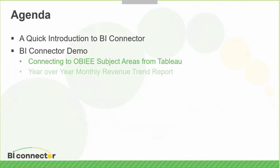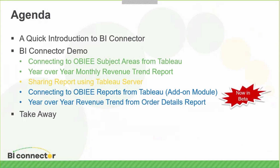Let's look at the quick list of things we're going to cover in this live demo. First, we'll walk through a brief introduction to BI Connector. Then we'll walk through five different scenarios: connecting to OBIE subject areas from Tableau, creating a year-over-year monthly revenue trend report, sharing the report via Tableau server, connecting to OBIE reports directly from Tableau, and personalizing that report. Then we'll look at takeaways and open up for Q&A.